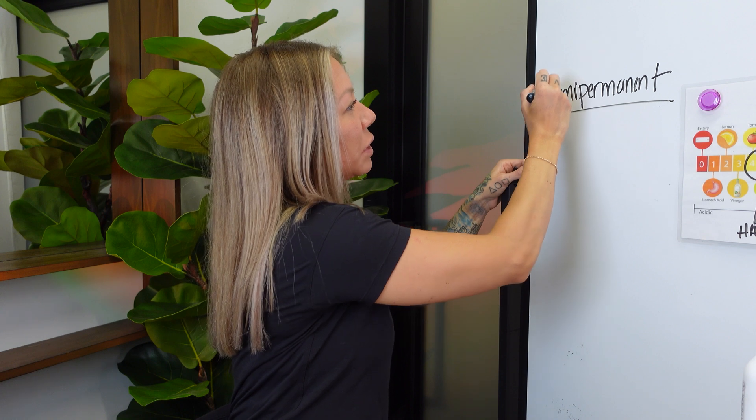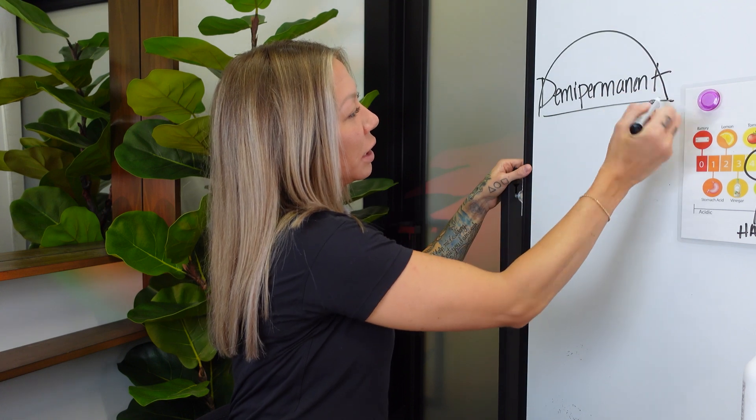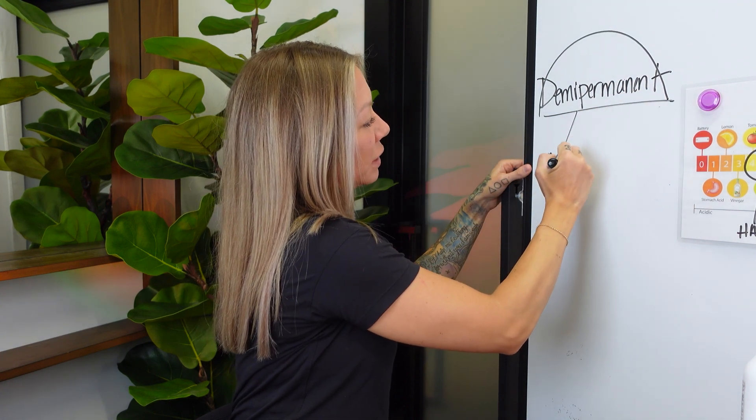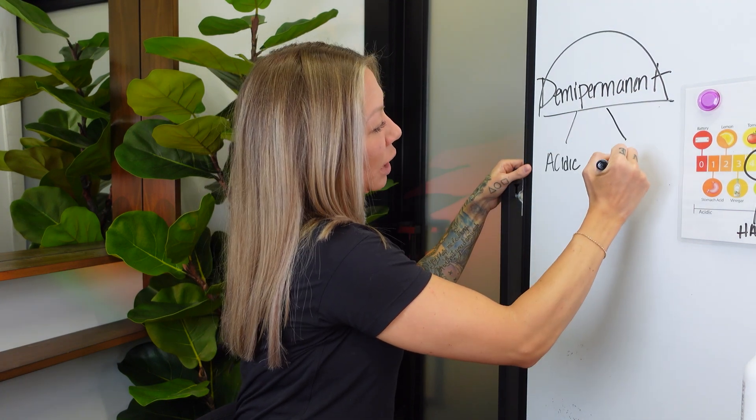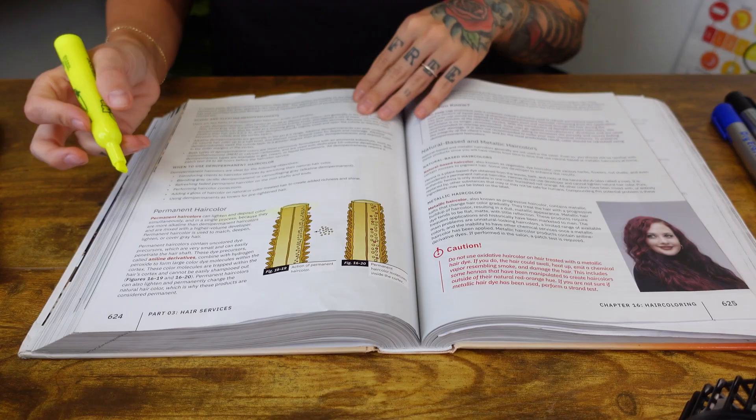Under the umbrella of demi-permanent you could have acidic or alkaline, and how you pick is really depending on what you're trying to do. Demi-permanent will last about 12 to 24 shampoos according to your book — that is a very big range. Again it goes back to hair type, texture, what kind of water they're using, and what kind of shampoo they're using.